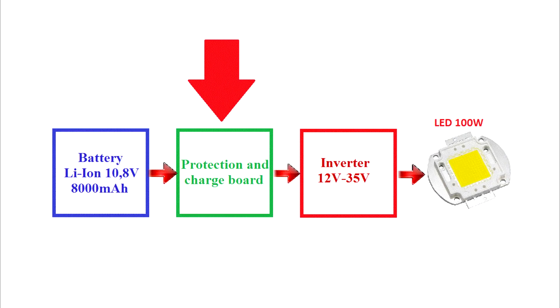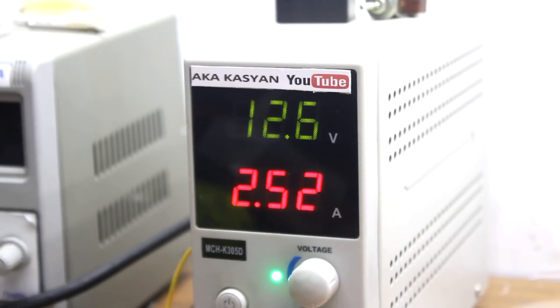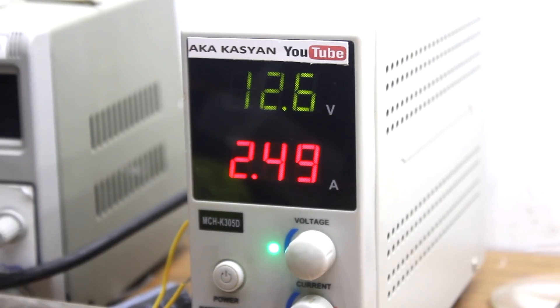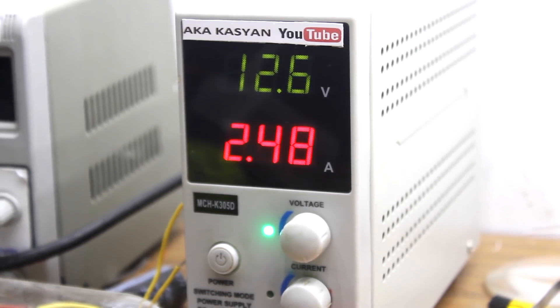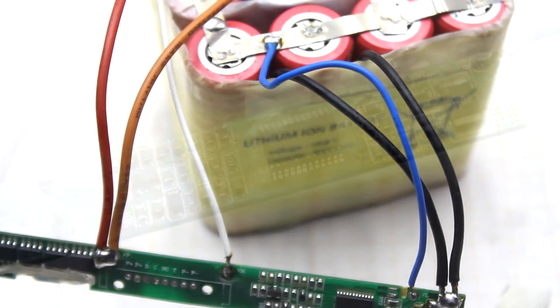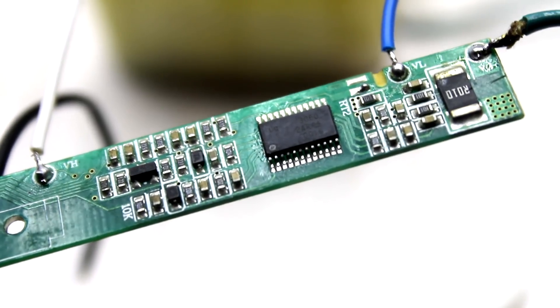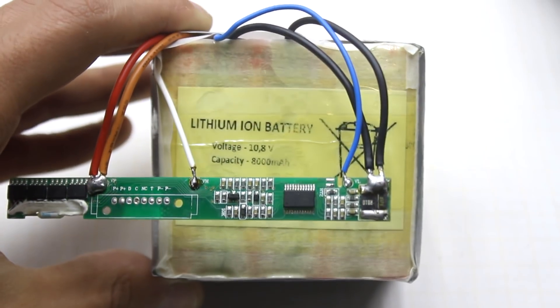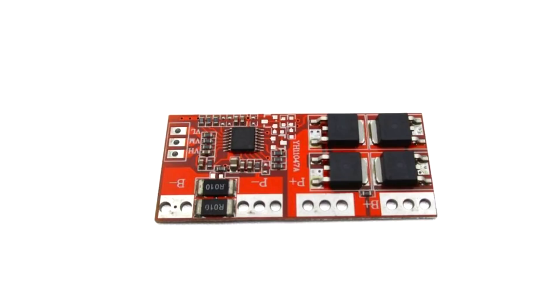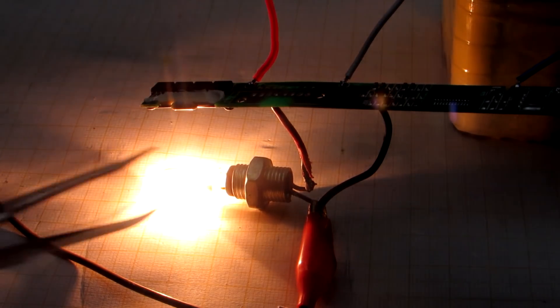Now let's speak about protection and charge board. Almost all lithium-ion batteries are equipped with these boards. As we know, lithium-ion batteries are very sensitive to the parameters of charge and discharge. These processes must be carefully controlled. If the battery is discharged too much, it could cause irreparable damage. Same can happen if overcharging. Such boards disconnect the battery in case of strong discharge or short circuits, and prevent overcharging. Here is a test.